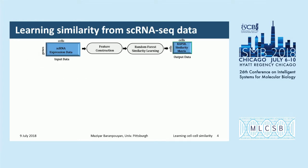Here is a general overview of our method. Our method receives single-cell expression data as input, and the output is a symmetric cell-to-cell similarity or dissimilarity matrix. The proposed method has two major steps: feature construction and random forest similarity learning.